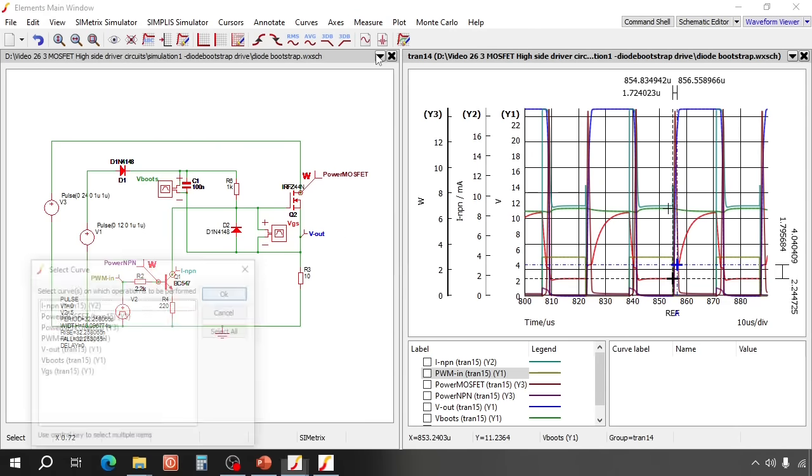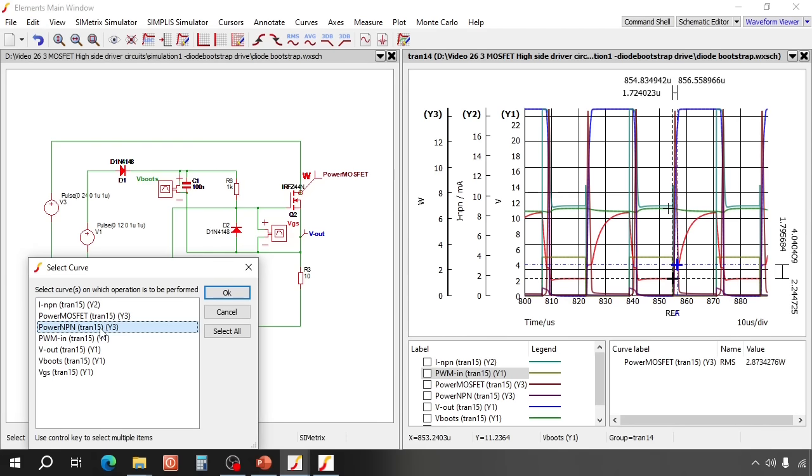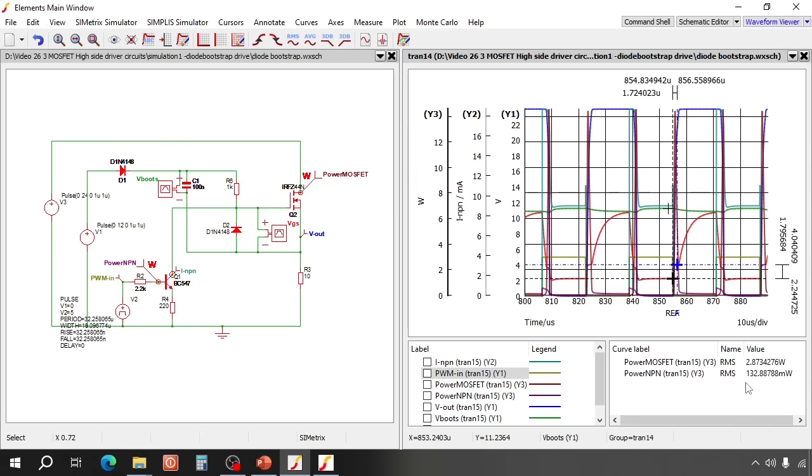Losses in the MOSFET are 2.9 watts. So at 60 Kelvin per watt the MOSFET will be about 200 degrees, so that is much too hot. Now let's check the losses in the BC547. We are at 32 milliwatt. That means that this transistor at 200 Kelvin per watt will become about 50 degrees at room temperature. That is quite okay.